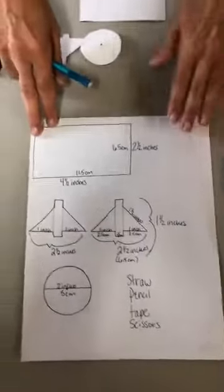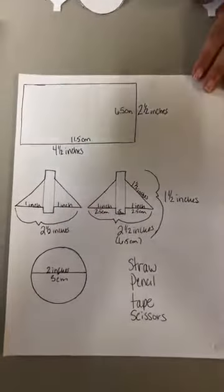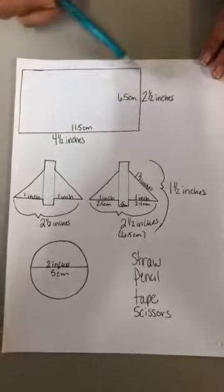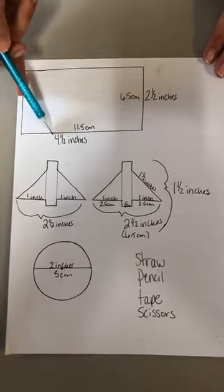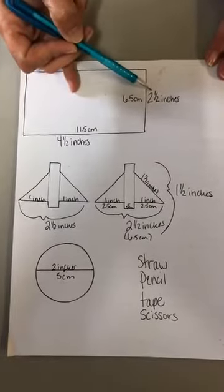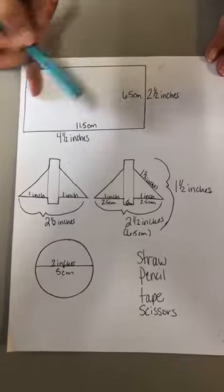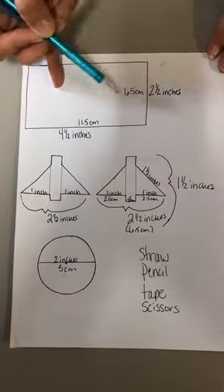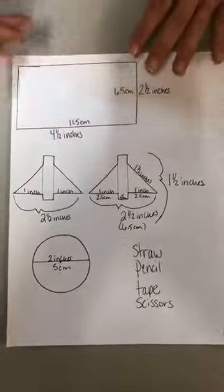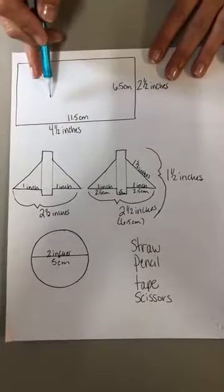So, let's talk about our measurements. With our piece of paper, we need a rectangle. I have 4 1/2 by 2 1/2 inches or 11 1/2 centimeters by 6 1/2 centimeters. Cut out nice and precise. And that's going to be the body of our rocket.